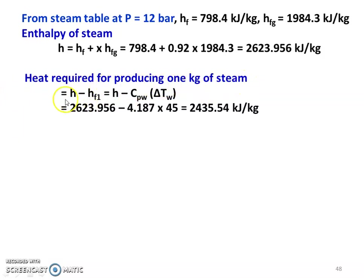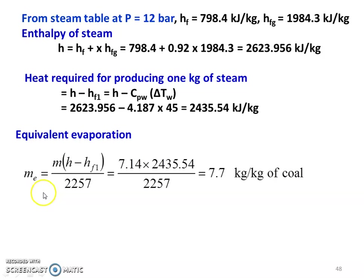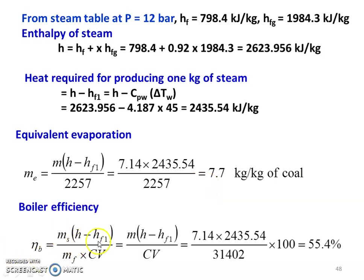Heat required for producing 1 kg of steam: h minus h_f1 = h minus C_pw × ΔT_w = 2623.956 minus 4.187 × 40.3 = 2435.54 kJ/kg. Equivalent evaporation: M_e = m × (h minus h_f1) divided by 2257 = 7.14 × 2435.54 divided by 2257 = 7.7 kg per kg of coal. Boiler efficiency: η_B = m × (h minus h_f1) divided by calorific value = 7.14 × 2435.54 divided by 31,402 × 100 = 55.4%.